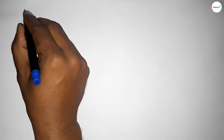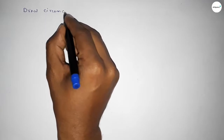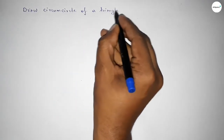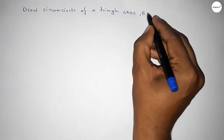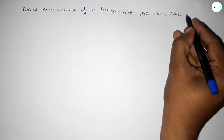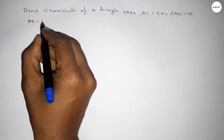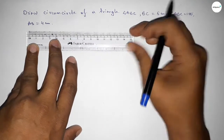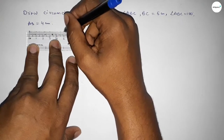Hi everyone, welcome to SSR Classes. Today in this video we have to draw a circumcircle of a triangle ABC whose one side BC equals 5 centimeters, angle ABC equals 100 degrees, and another side AB equals 4 centimeters. So let's start the video.